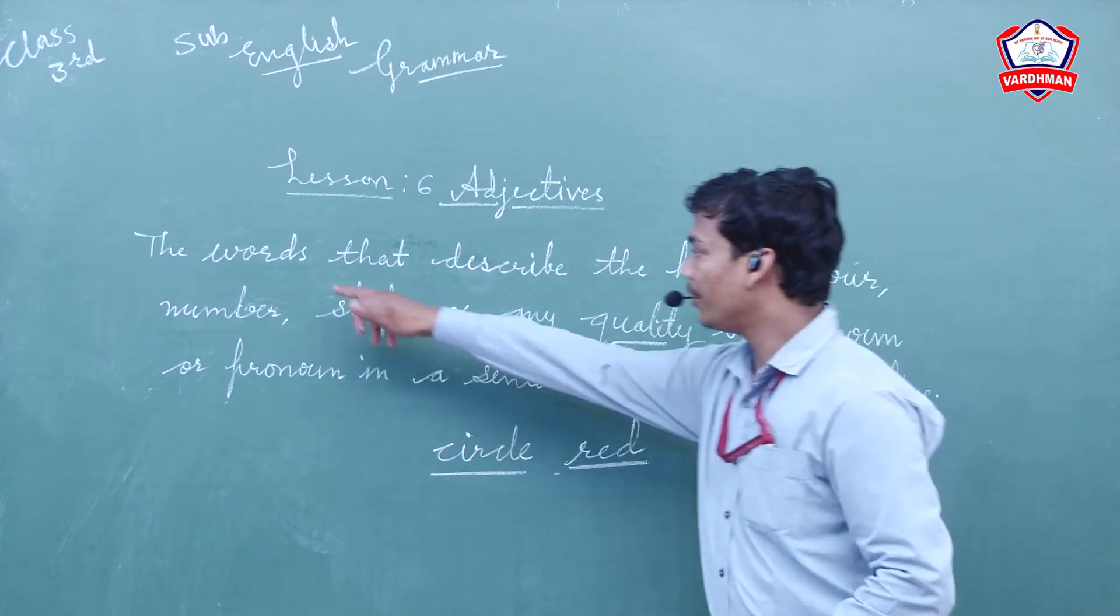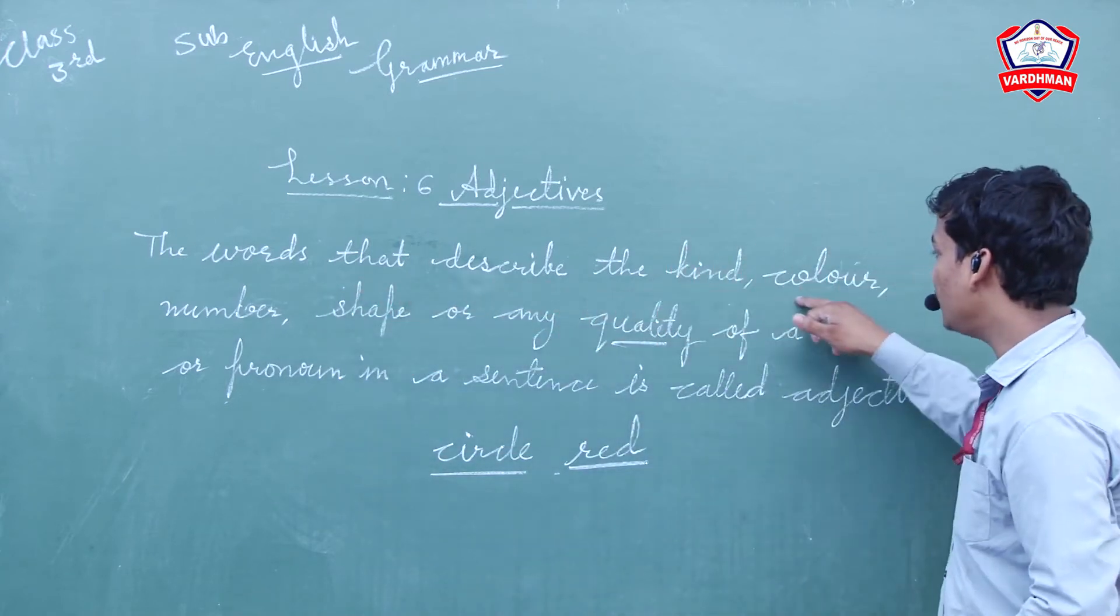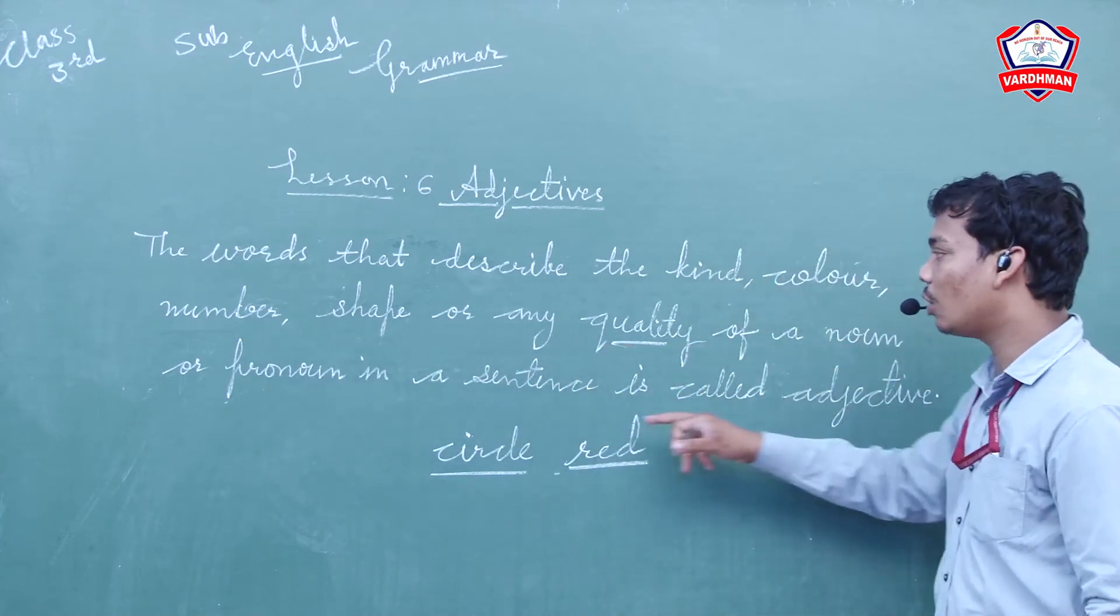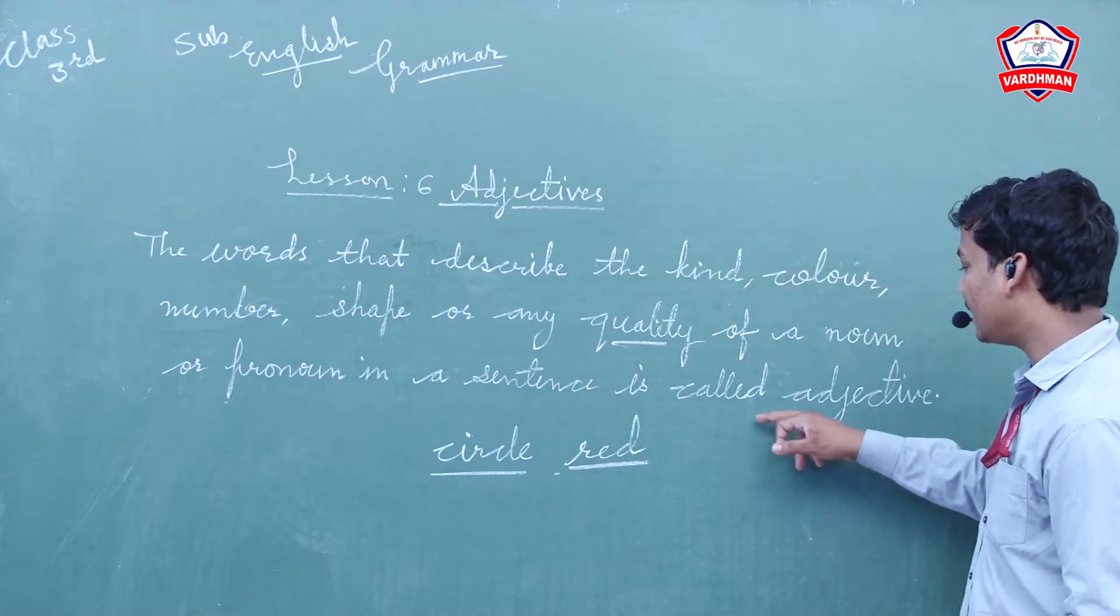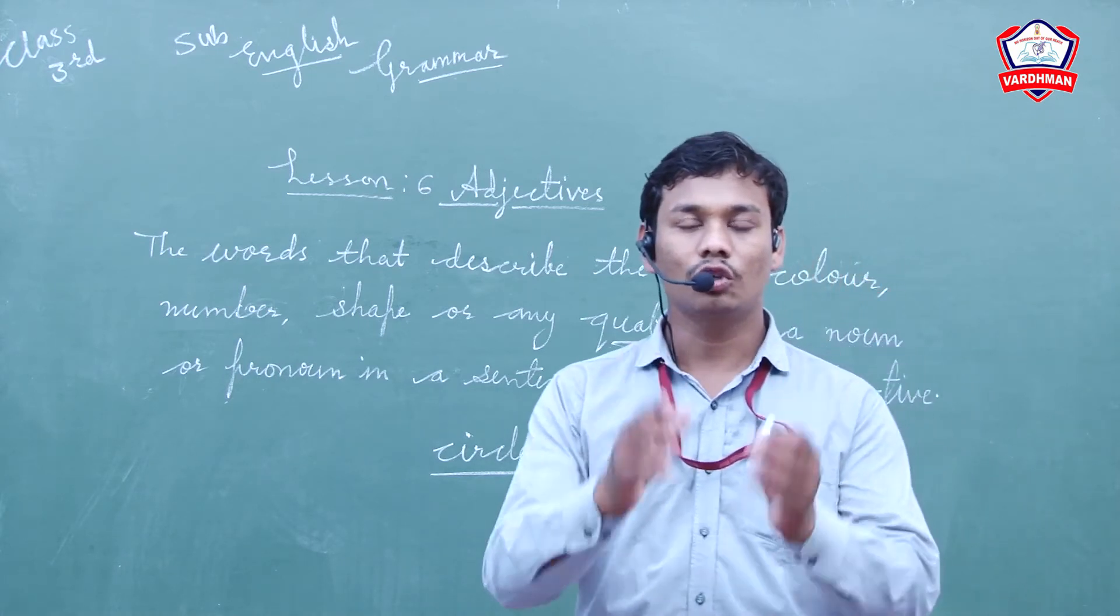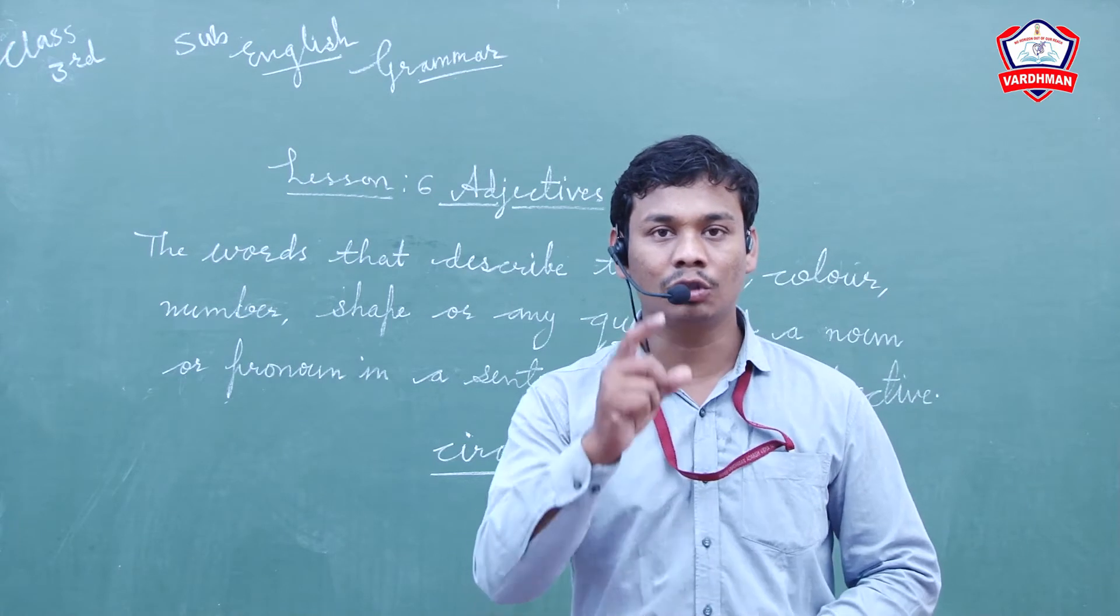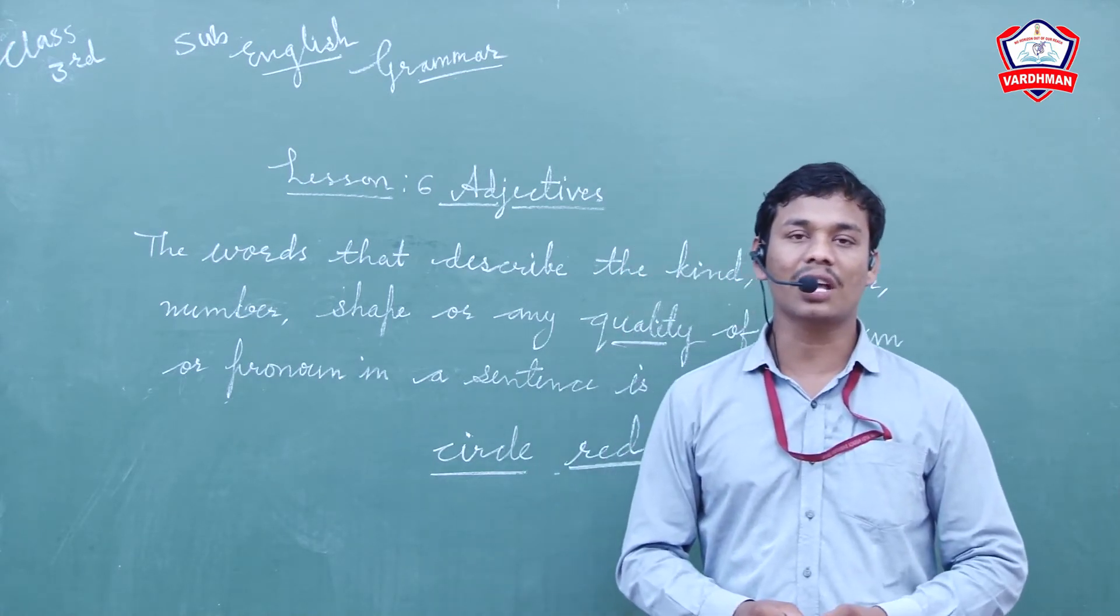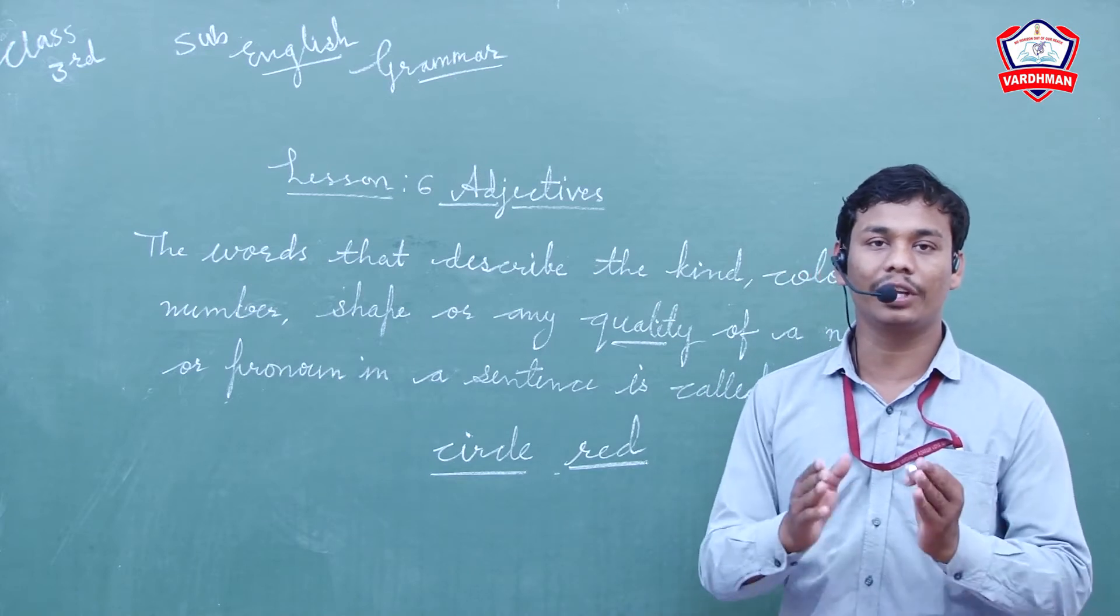I am repeating: the words that describe the kind, color, number, shape, or any quality of a noun or pronoun in a sentence are called adjectives. In short definition, you can write: Listen to me carefully - describing words are called adjectives.